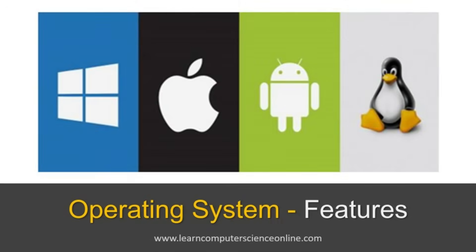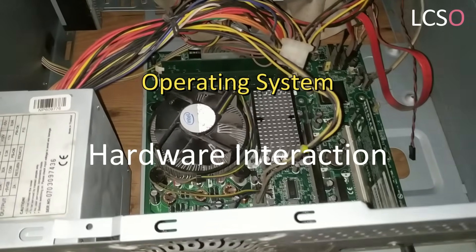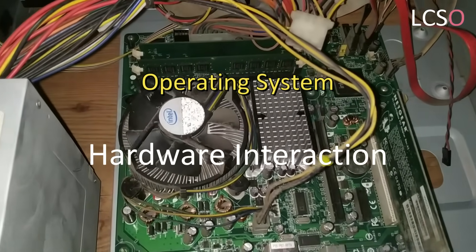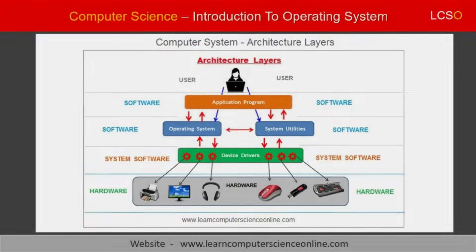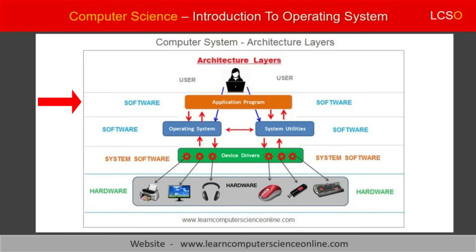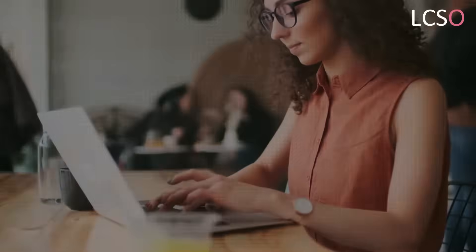Let us now discuss some important features of the operating system. Hardware interaction is the most important feature of the operating system. In computer architecture, the operating system works as an interface between the application software and the computer hardware. The application software is designed to allow the computer user to perform various operations on the computer. These operations might also include some hardware interaction.